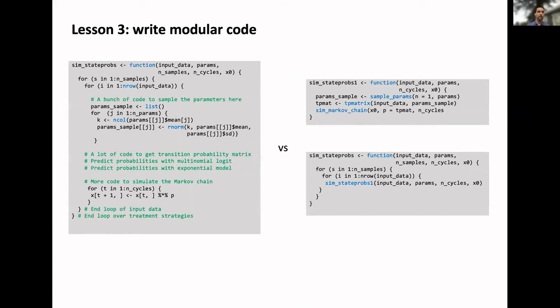This is one of the most important: writing modular code. On the left is an example of the opposite, where we have a loop over the samples from the PSA, a loop over all our treatment strategies and patients. And then within that loop, we're doing a whole bunch of stuff: sampling the parameters, creating the transition probability matrices, simulating the Markov chain. You can see how that can become pretty unruly, particularly if you have lots of if-elses or different rules. On the other hand, we have something more modular. We have a sim state probabilities function which will simulate for a particular iteration of the nested loop the state probabilities in three steps: sampling parameters, computing the transition probability matrix, simulating the Markov chain. The function on the bottom is a helper outer function which will just iterate over the samples and input data and compute the state probabilities.